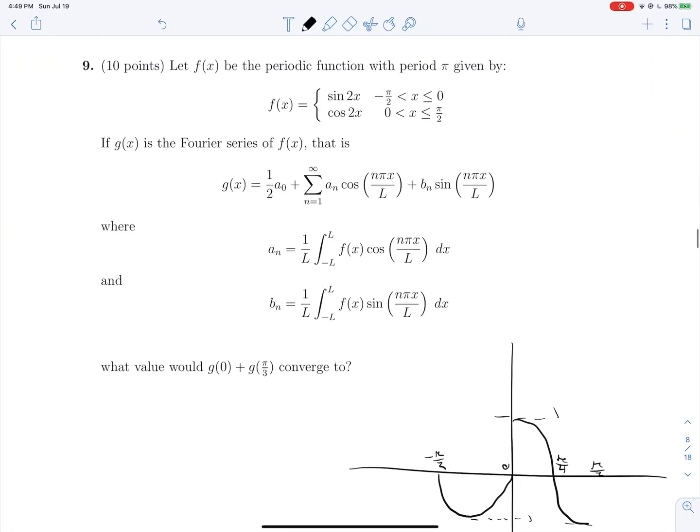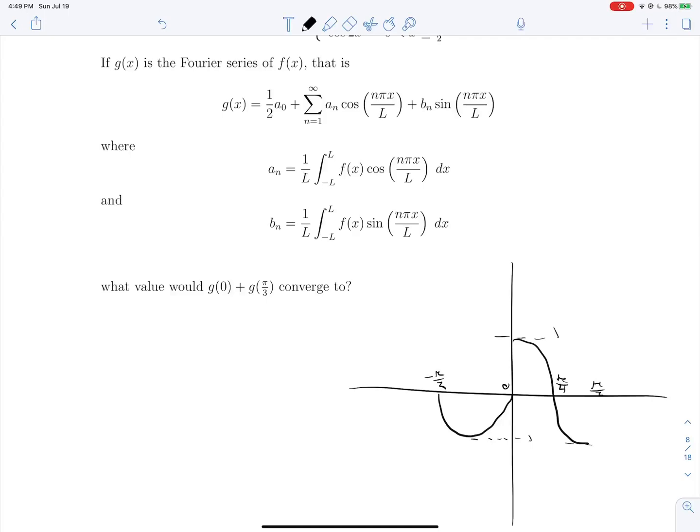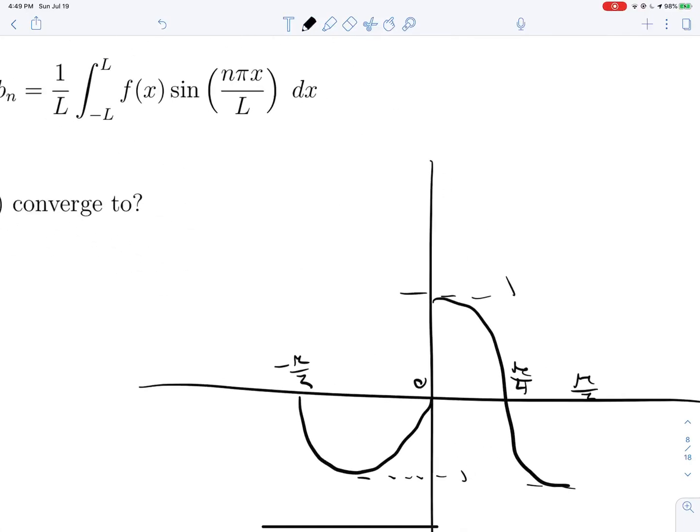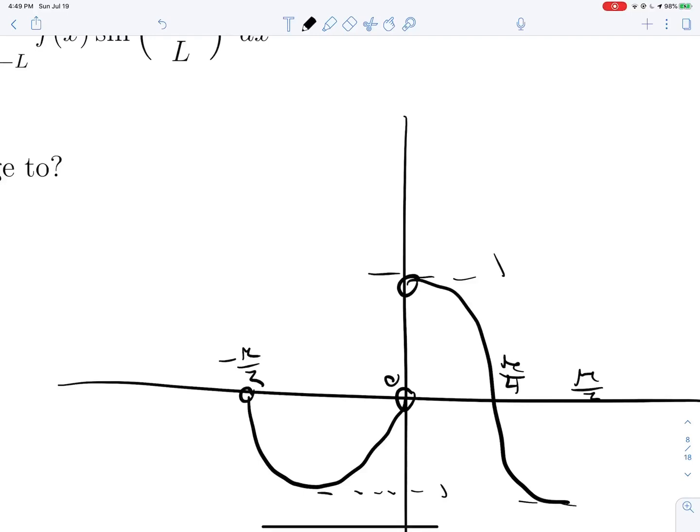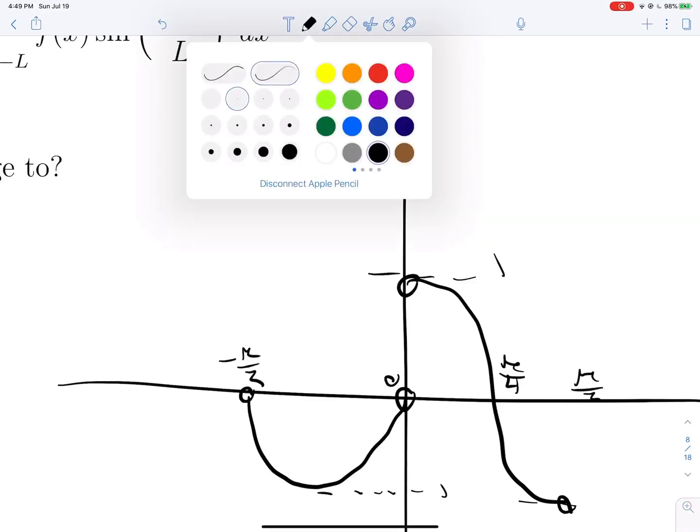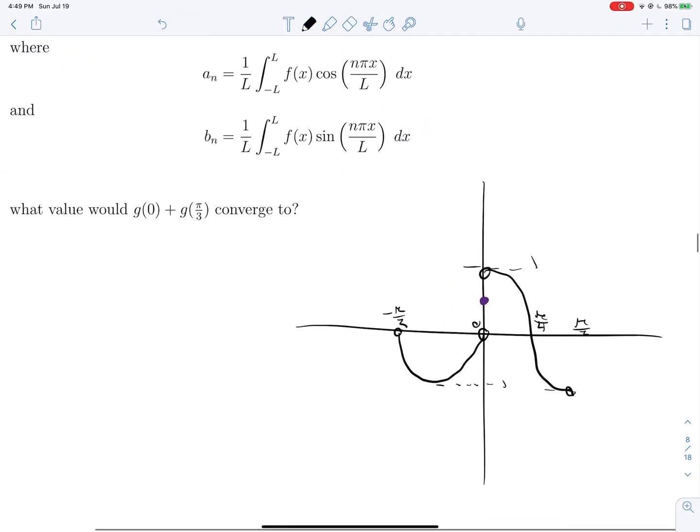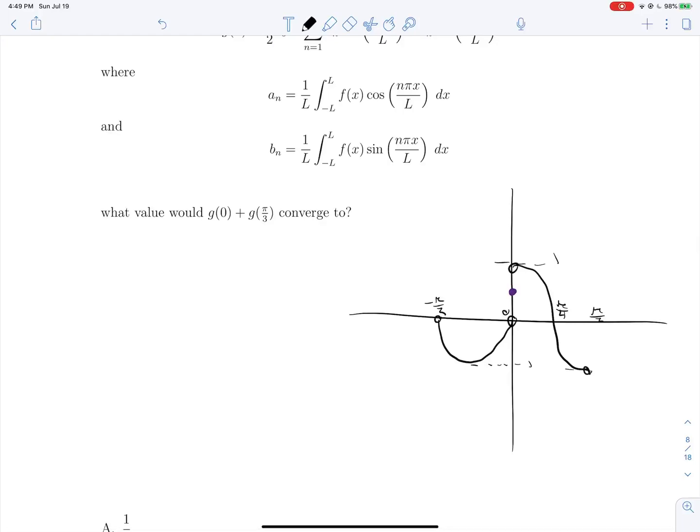So now that we know what our function looks like, let's think about what the Fourier series will be doing because they're asking us to compute g at 0, but we see that there is a discontinuity in our function at x equals 0. And what we know about Fourier series is that they will tend to split the difference. So if we actually evaluate our Fourier series at t equals 0, we will find that it will evaluate to exactly 1/2. So we can say that g(0) is 1/2.